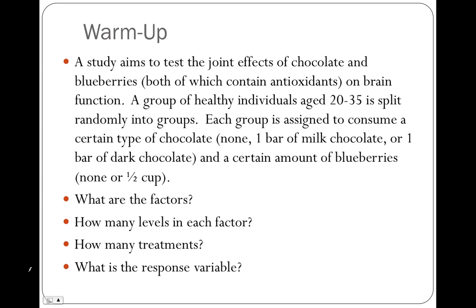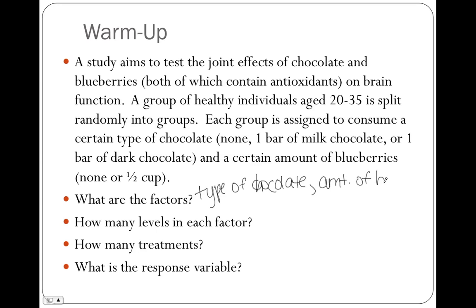The first question is: what are the factors, and how many factors are there? There are two. The factors are the type of chocolate and the amount of blueberries.